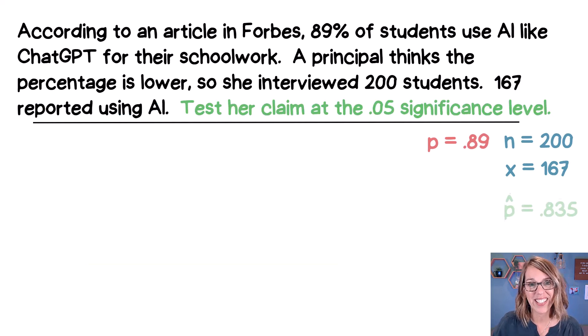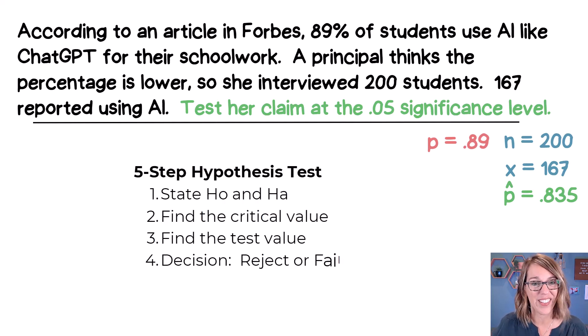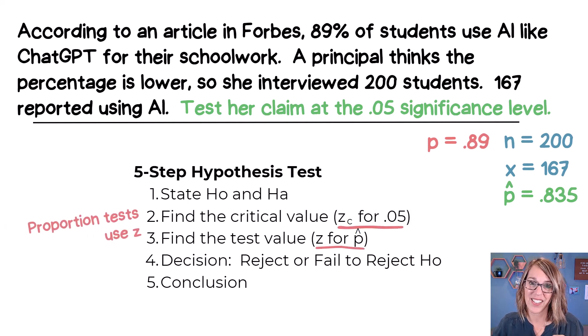Now we want to test this claim at the 0.05 significance level, and we're going to use our five-step hypothesis testing procedure to do this. Now with our proportion tests, when we're looking for the critical or the test value, we're going to be using Zs. Let's go ahead and start with our hypotheses.